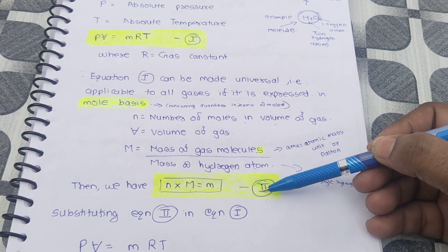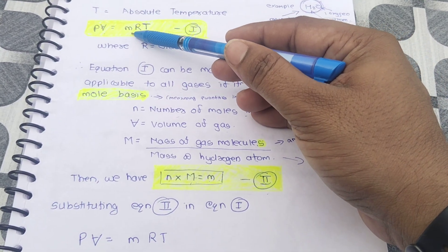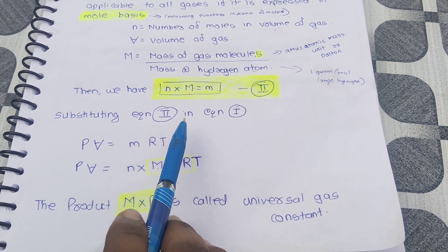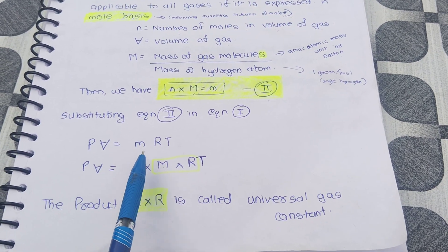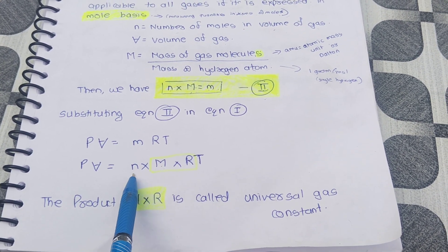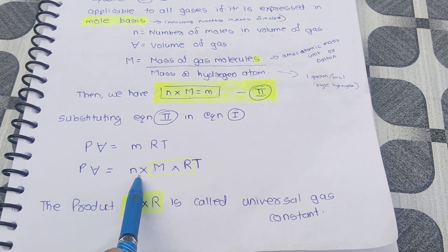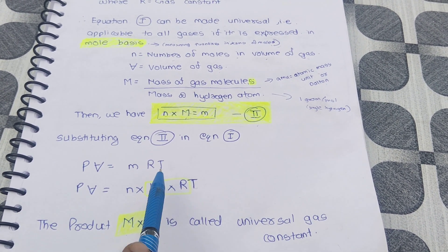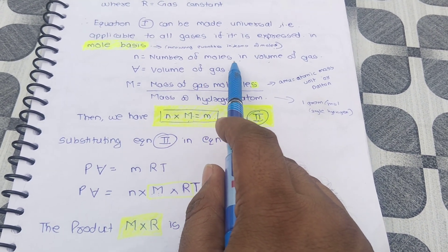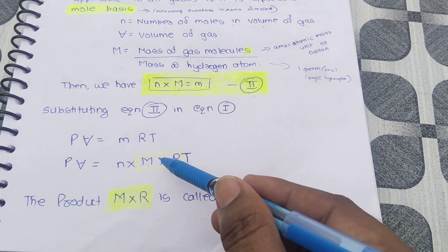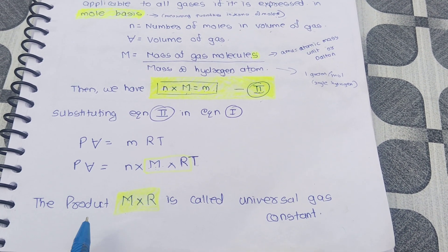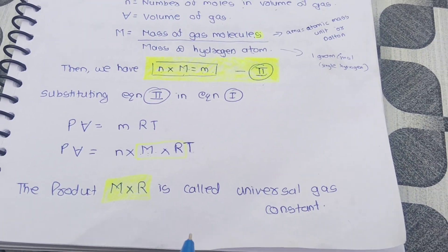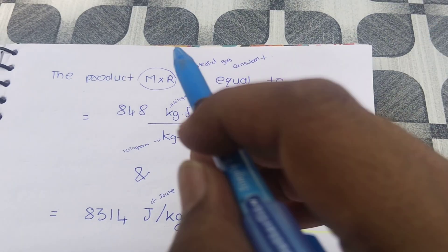We now substitute equation two into equation one. In pV = mRT, in place of small m, we substitute capital M into small n. So we get pV = n × M × R × T. The product M into R is known as the universal gas constant. Here n is number of moles, M is molar mass, R is the gas constant, and T is the absolute temperature.